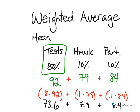So after you've done your calculations you should see that for your tests you have a weighted score of 73.6 points or percent, and for homework you have 7.9 percent, and for participation you have 8.4. So all we have to do now is add them together. If you've done your calculations correct you should see that we have a score of 89.9 or 89 and nine-tenths.